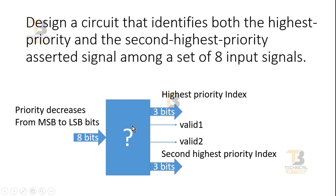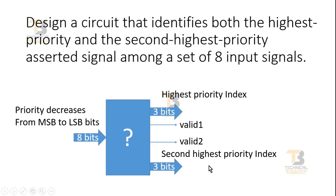Valid 1 will be high only if this logic is able to detect any high priority index, and Valid 2 will be asserted only when it is able to detect the second highest priority index. Otherwise, they will remain 0. For example, if all the input bits are 0, Valid 1 and Valid 2 will remain 0. If only one of the 8 bits is asserted and all 7 are de-asserted, then only Valid 1 will be asserted. Valid 2 will be asserted only when 2 or more than 2 inputs are asserted.